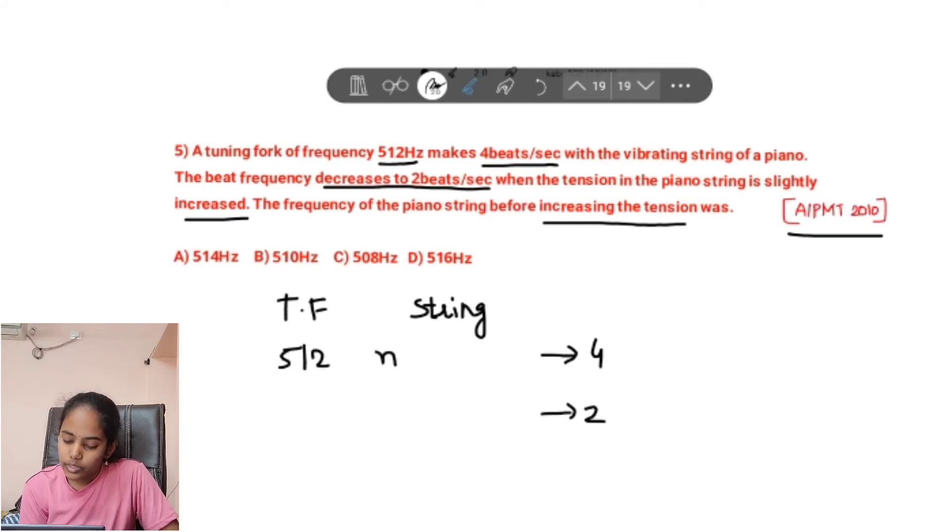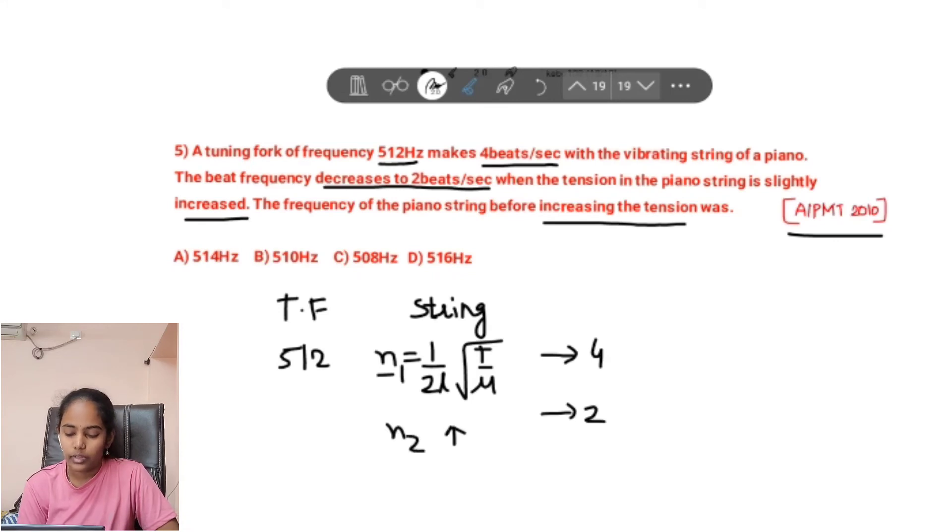There is a tuning fork and a string of piano. The tuning fork frequency is 512. We don't know the string frequency. It produces 4 beats per second. Now beat frequency decreases to 2 beats per second when the tension is increased. So the unknown frequency can be written as 1 by 2L times square root of T by μ. So when the tension increases, obviously n will increase.